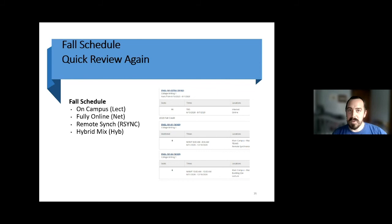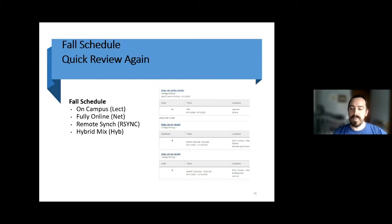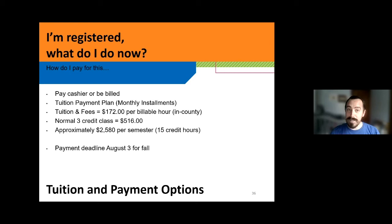We also have financial aid available. Let's talk about payment. We have the payment plan you can sign up for, or you can pay for classes outright. Payment is due for the fall on August 3rd — that's not the registration deadline, you can still register after that. August 3rd is when you have to make that first payment, set up a payment plan, or pay for your classes. If you're going full-time, it'll be right around $2,500 to $2,600 a semester, and you only pay for one semester at a time, not for the whole year.